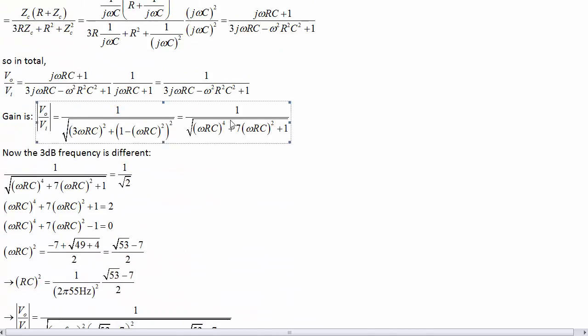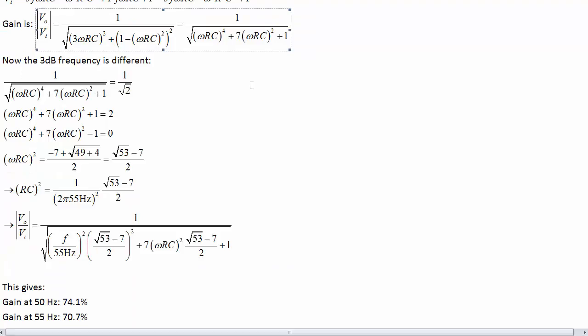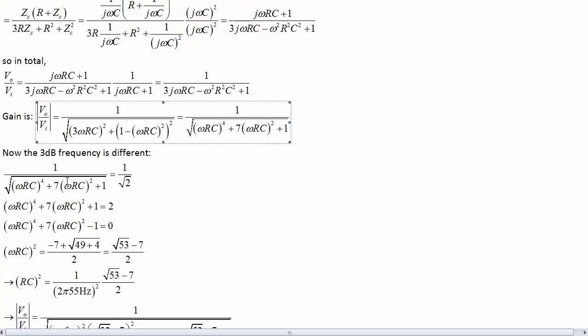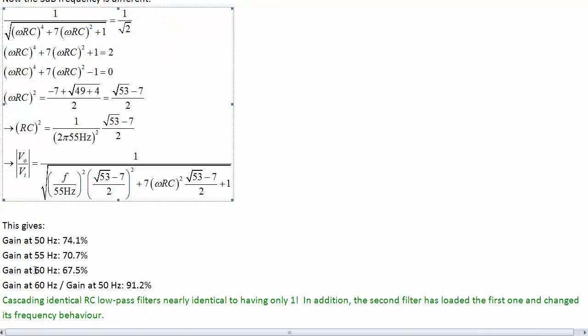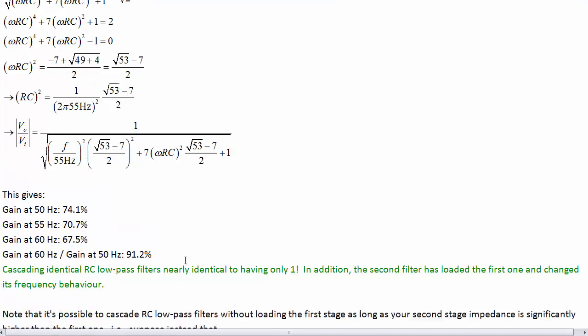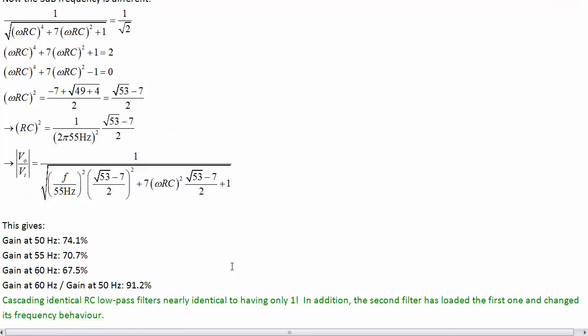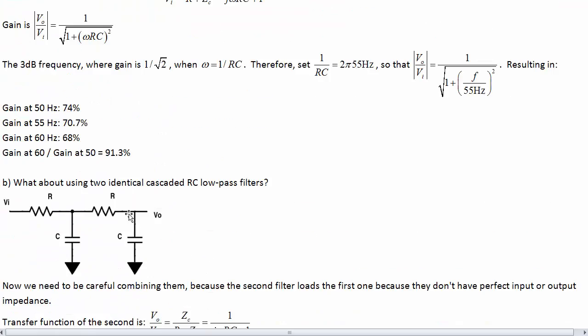Calculating all of that, we have the gain here. And solving for the 3 dB frequency lets us figure out what RC needs to be. Substituting that in, here's our response. And then we can sub in the frequency of 50 Hz and 60 Hz. Checking also at 55 Hz that we've got a gain of 70.7%, or 1 over root 2. Now we've got 74% and 67.5%, which is almost the same as just one RC filter. That's no good.